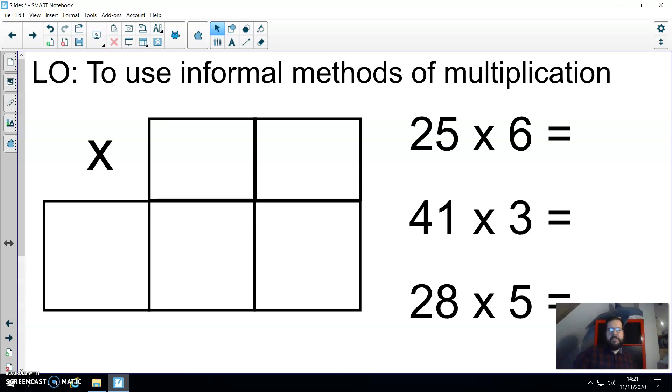Here, I've got three examples for you to have a try at. So draw out some grids, partition the multiplicand up, multiply them by the multiplier, then add the answers together. And I will put the answers up now. So pause the video, have a go at them and then see whether you get the right answers.